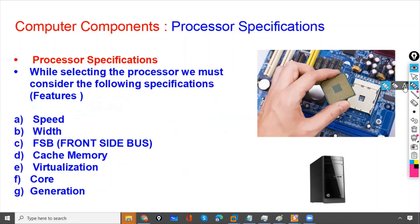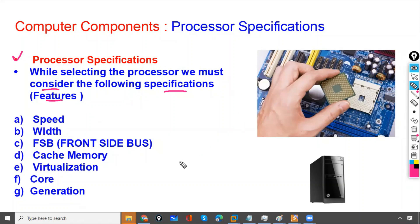While purchasing or selecting a processor, we need to check its specifications. We must consider the following: the speed of the processor, the width of the processor, and the FSB (Front Side Bus) speed.